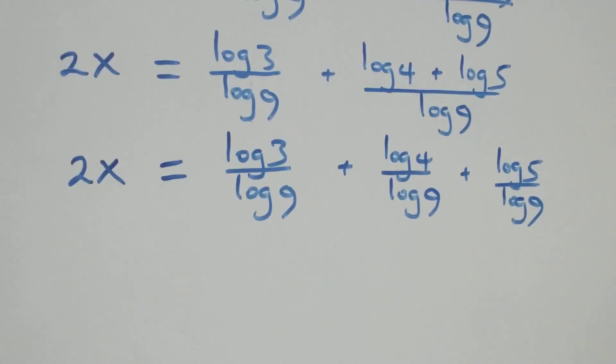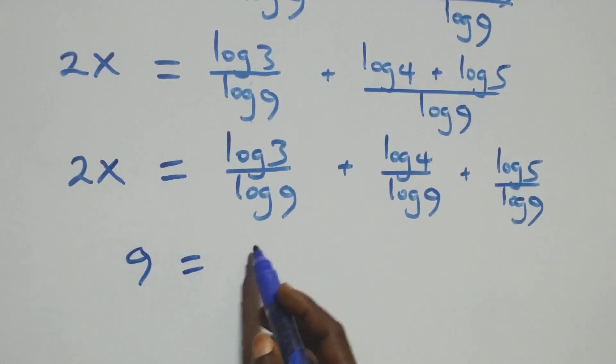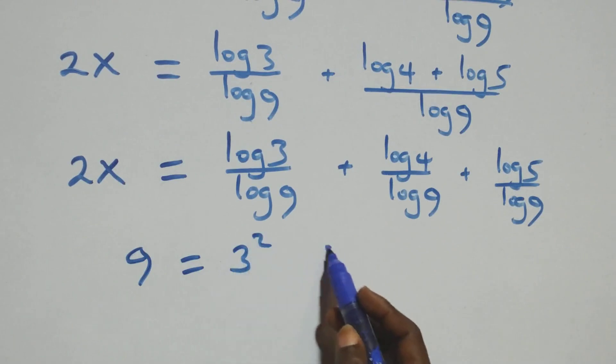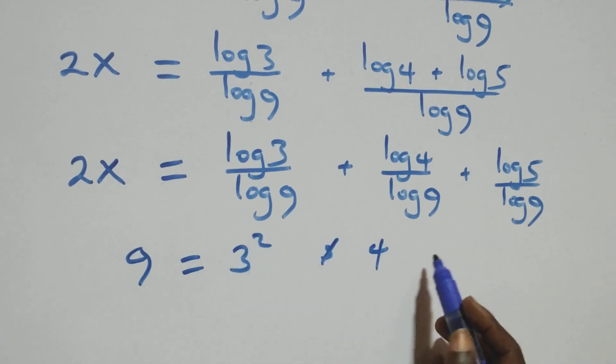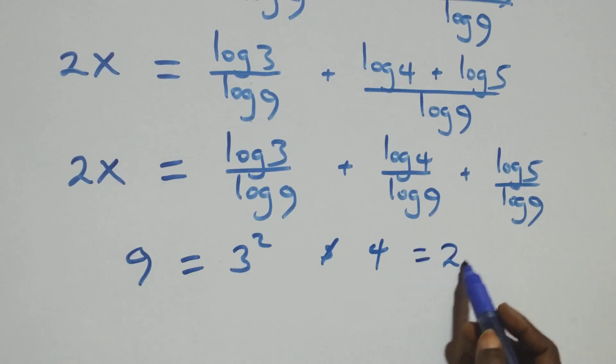From here, 9 can be written as 3 times 3, that is 3 squared. And also 4 can be written as 2 times 2, that is 2 squared.